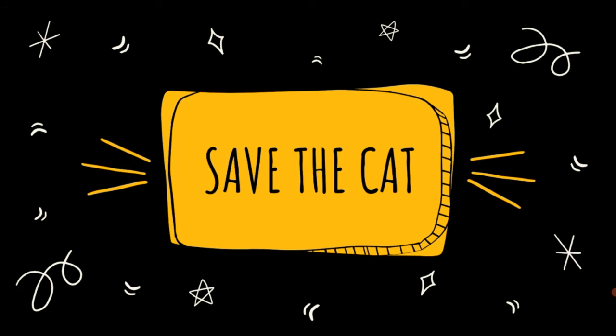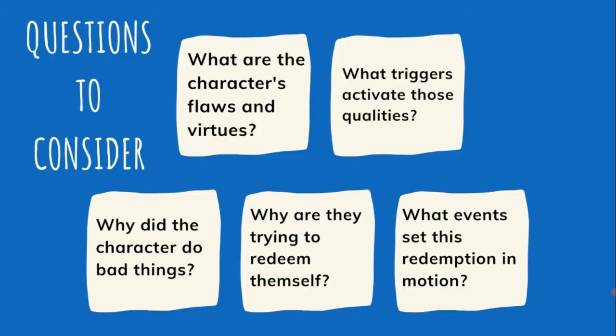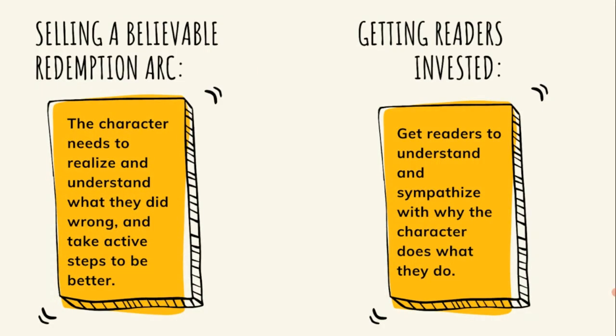When considering redemption, you first need to consider the character's flaws and virtues. Think of any potential triggers that activate those qualities and how they might tie into the reason why this character did bad things and also why this character is trying to redeem themselves. What are the events that set this development into motion? The main thing to remember is that the character needs to realize and understand what they did wrong and want to be better, taking active steps to improve. Your audience also needs to understand not just why the characters did what they did, but also why they are changing their ways.